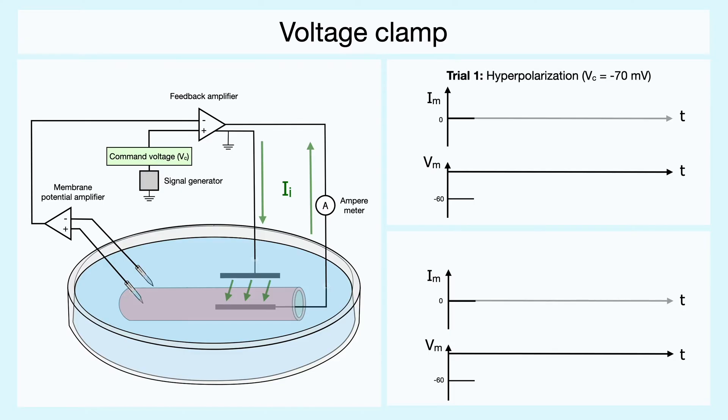In our first trial, let's set the command potential at negative 70 millivolts to slightly hyperpolarize the membrane. Before we see the results, remember that since the command voltage is below the membrane potential, the voltage clamp will withdraw positive current or in other words send negative current into the system. For the split second that the resting membrane potential adapts to the command voltage, the capacitive current flows and causes this high negative peak.